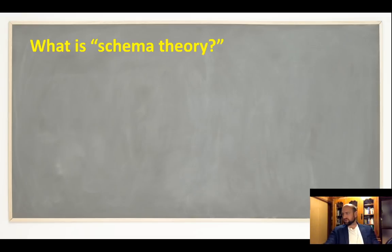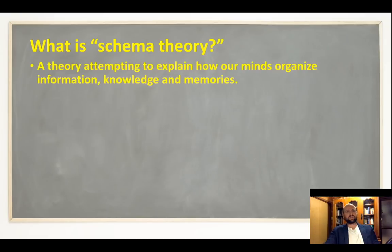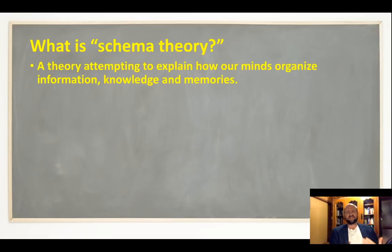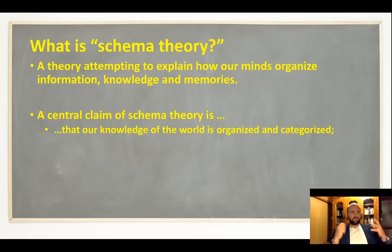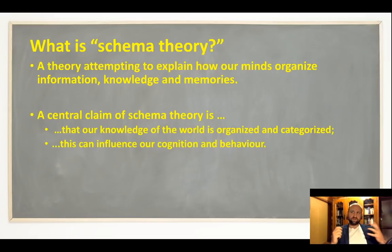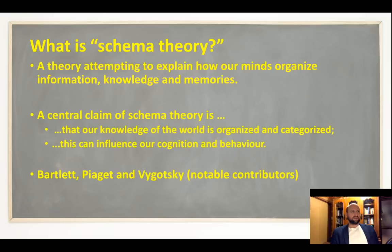An important place to start when understanding any psychological theory is what it is trying to explain. Schema theory is trying to explain how our minds organize information, knowledge, and memories. One of the central claims is that we categorize and group all the information in our memory into schemas, and this grouping and categorization is going to influence the way we think and behave.